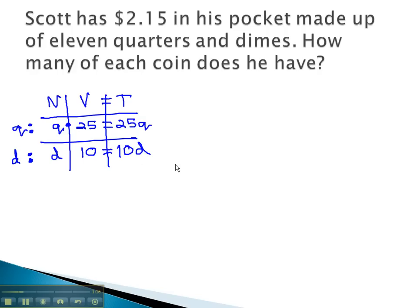We're also given some total information. The 215 is the total amount of money. Our money is found in the last column, where we put the 215 in cents to match the 10 and 25, which are also in cents.